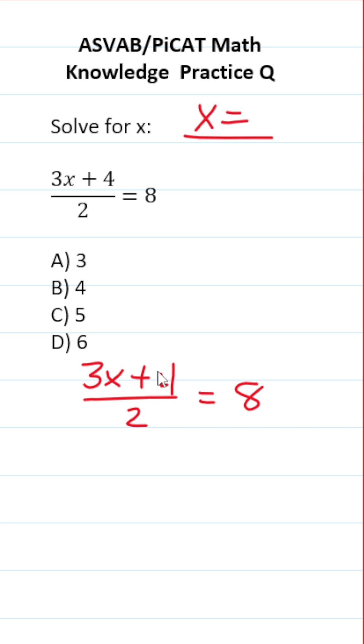To get x by itself, we're going to start by multiplying both sides of this equation by 2. In doing so, this crosses out here and here, leaving you with 3x plus 4 over here. 8 times 2, of course, is 16.